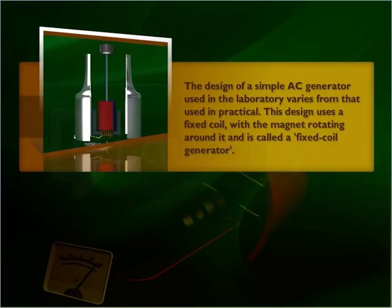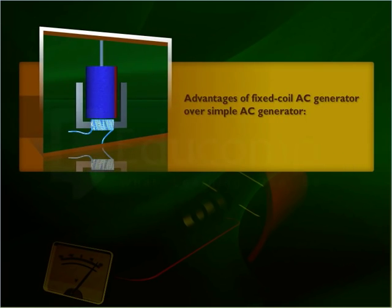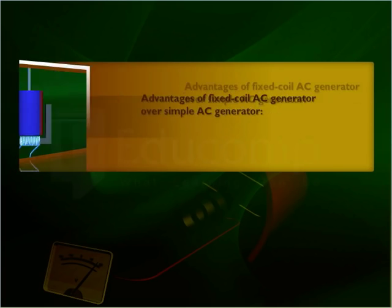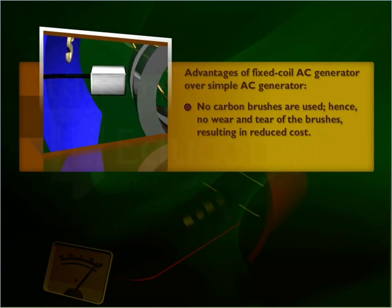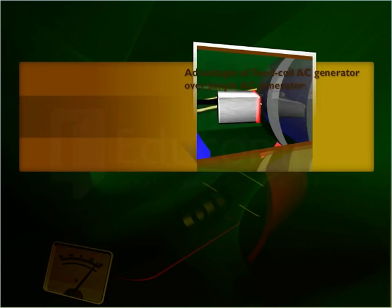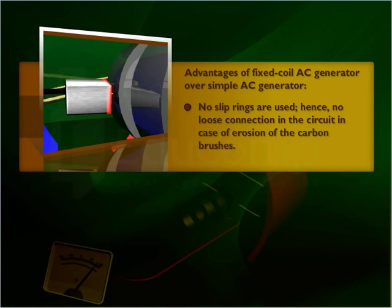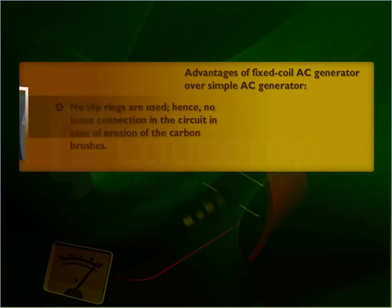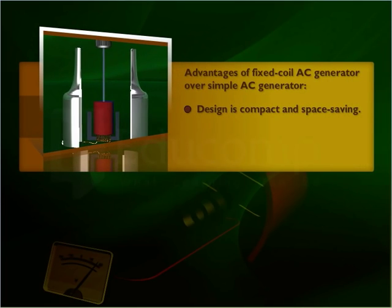The design of a simple AC generator used in the laboratory varies from that used in practice. This practical design uses a fixed coil with a magnet rotating around it and is called a fixed coil generator. Advantages of a fixed coil AC generator over a simple AC generator: no carbon brushes are used, hence no wear and tear of the brushes, resulting in reduced cost; no slip rings are used, hence no loose connection in the circuit in case of erosion of carbon brushes; and the design is compact and space saving.